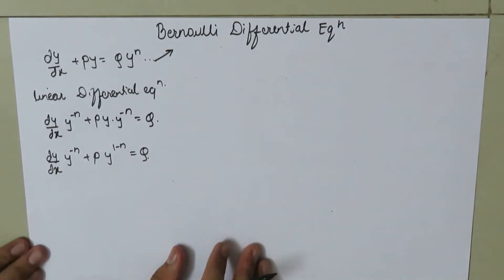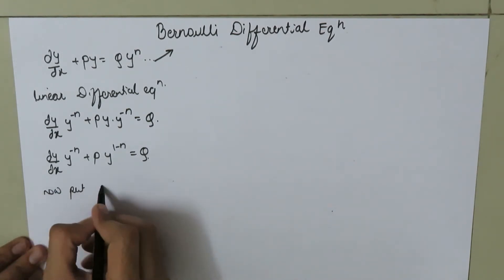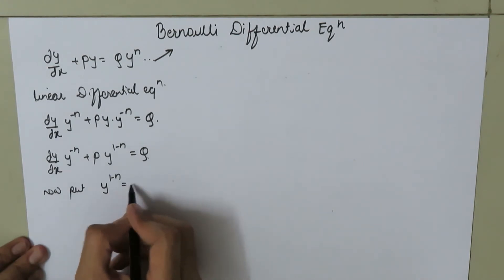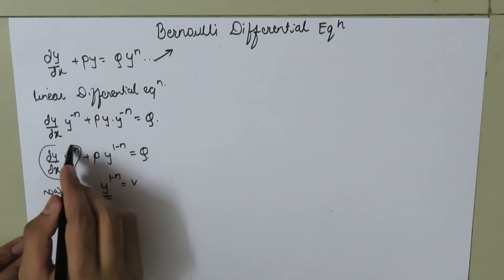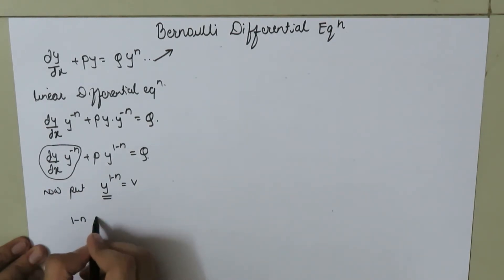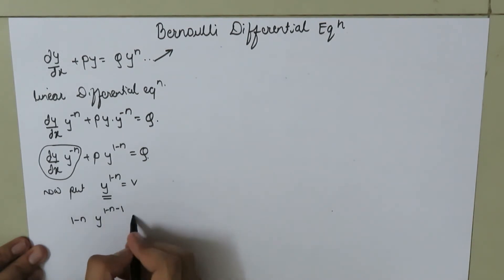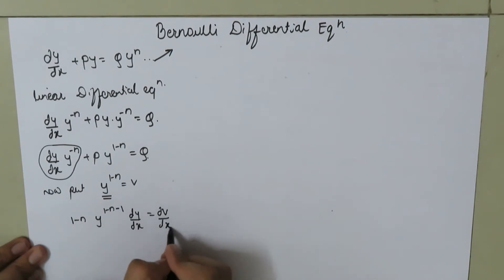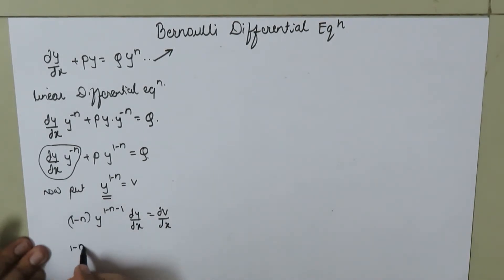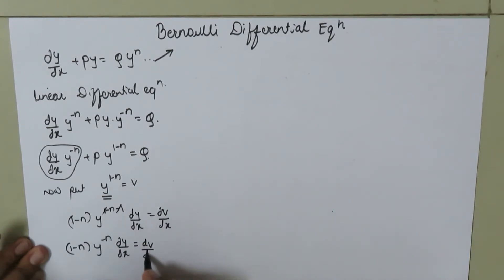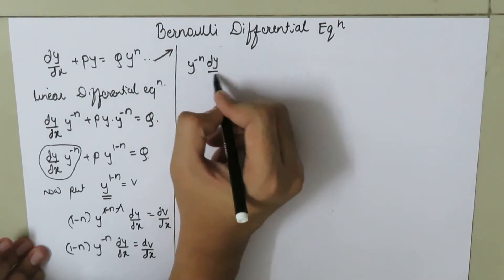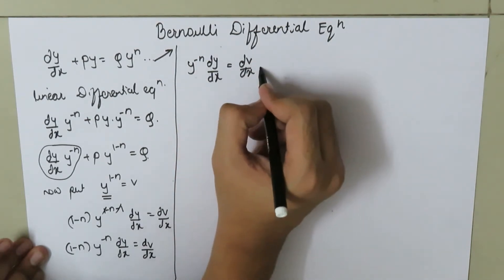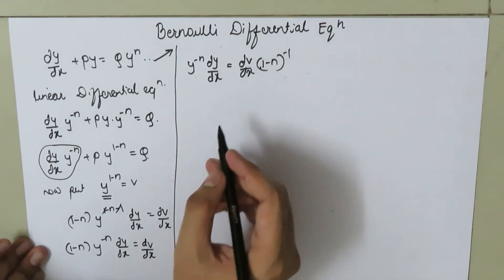Now we put y to the power 1 minus n equal to v, and differentiate this equation with respect to x to eliminate the y term. So 1 minus n times y to the power (1 minus n minus 1) times dy/dx equals dv/dx. This simplifies to: y to the power negative n times dy/dx equals dv/dx times (1 minus n) to the power negative 1. Let's call this equation number 2.